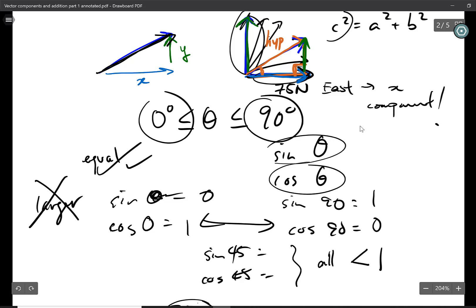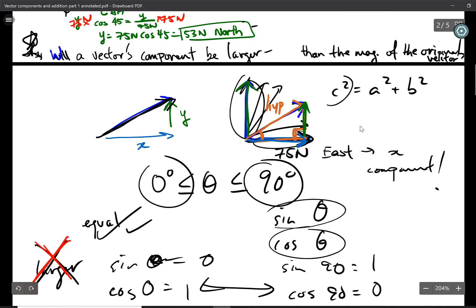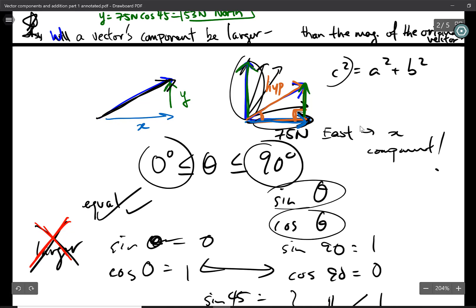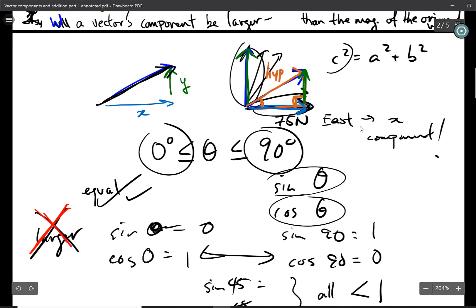They cannot be larger. Let's use red pen. It can never be larger. So if you said no to this question, you are right. It cannot be larger. However, it can be equal, though. Equal is still an option, and that just means that your vector is just pointing vertical, horizontal.